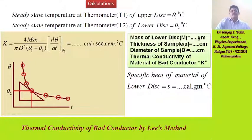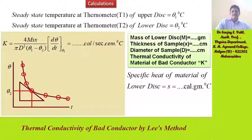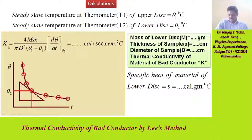So this is the experiment for thermal conductivity of a bad conductor by Lee's method. We can find thermal conductivity K using this formula.